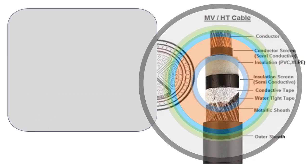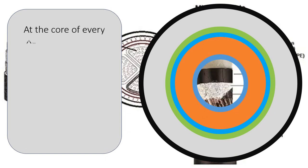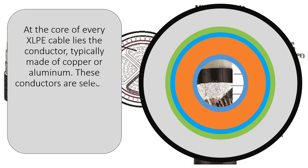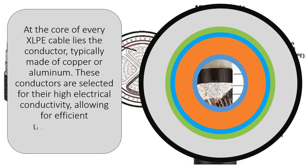Conductor: At the core of every XLPE cable lies the conductor, typically made of copper or aluminum. These conductors are selected for their high electrical conductivity, allowing for efficient transmission of electrical power.